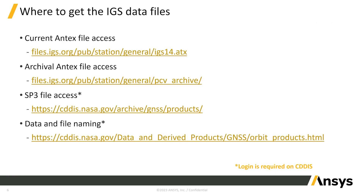Here's a quick guide to where to get the IGS data files. You can get the ANTEX data files from the top link shown here — these contain the mean phase centers and phase center variations for the GNSS satellites, with a current time file and historical files also available. They also provide SP3 files containing ephemeris solutions for the GNSS satellites along with coarse clock solutions, and a finer granularity clock solution is available as well. There's also a site that describes all of these various data products.